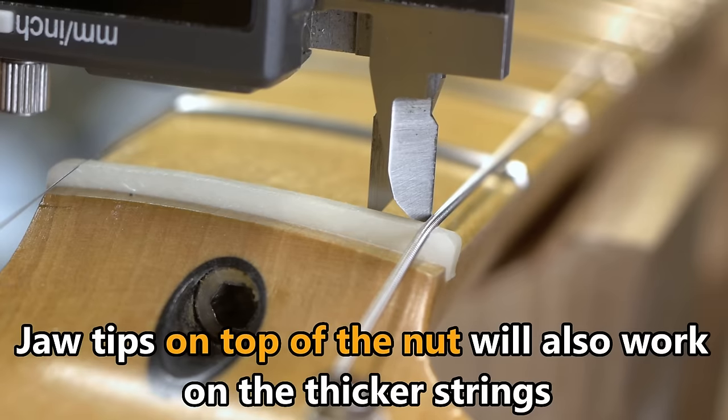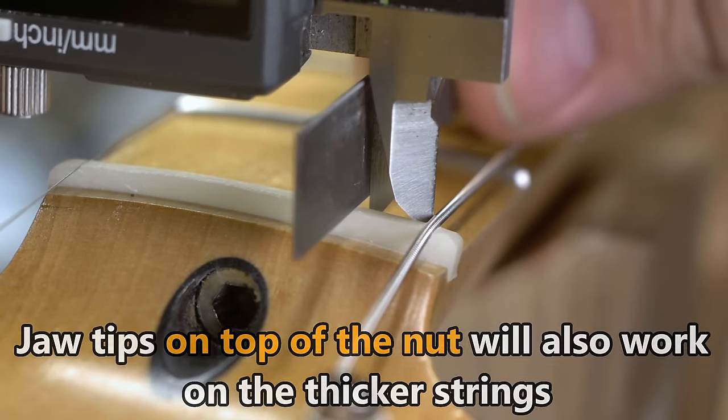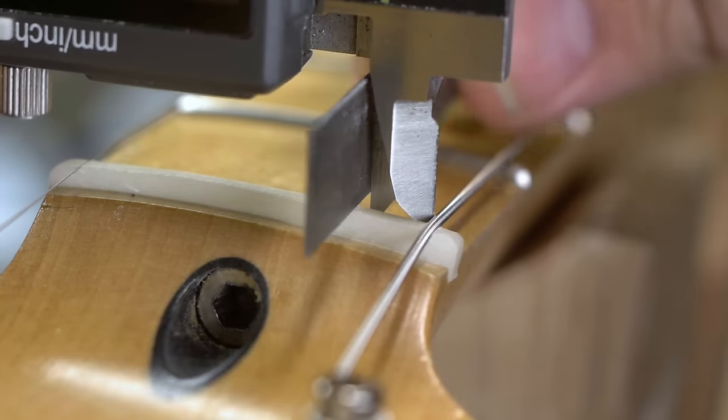With the jaw tips on the fingerboard, one jaw goes against the previous string and the other jaw acts as a fence for the nut file, keeping it at the exact spacing necessary to get equal spaces between every string.